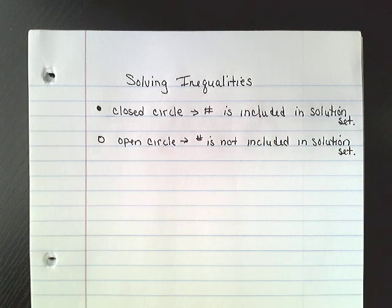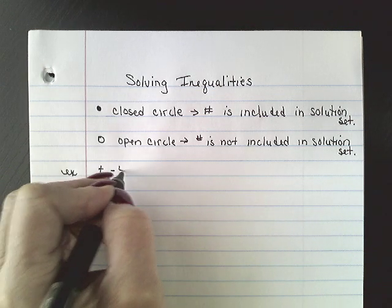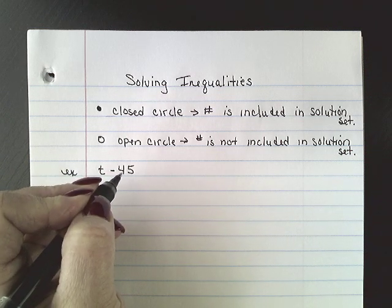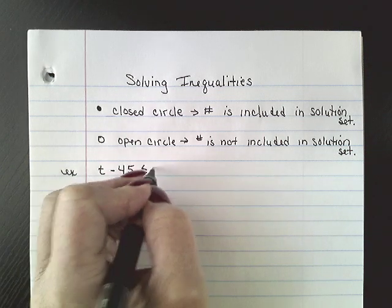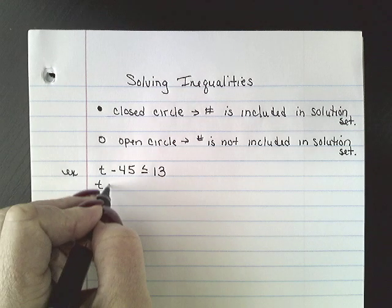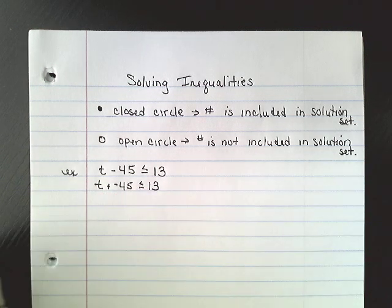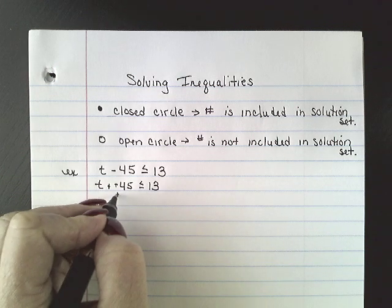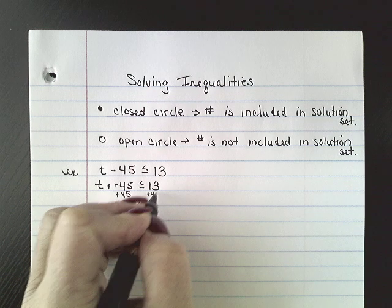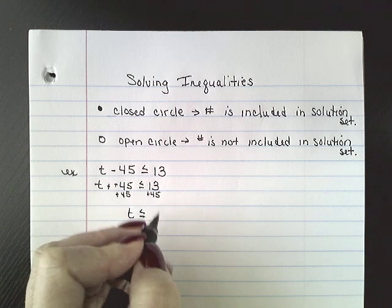We're going to solve them and we're going to graph them. Example one: t minus 45 is less than or equal to 13. We can rewrite that as t plus negative 45 is less than or equal to 13. You solve inequalities just like you solve equations, so I'm going to add 45 to both sides, and t is going to be less than or equal to 58.